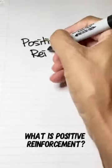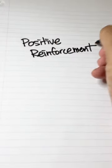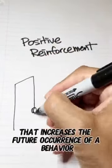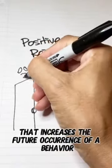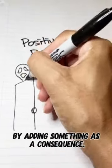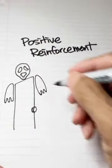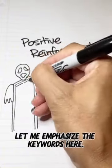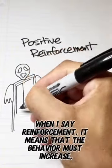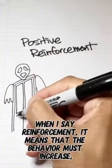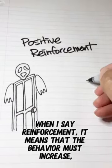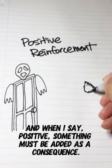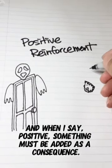What is positive reinforcement? Positive reinforcement is a procedure that increases the future occurrence of a behavior by adding something as a consequence. Let me emphasize the keywords here. When I say reinforcement, it means that the behavior must increase. And when I say positive, something must be added as a consequence.